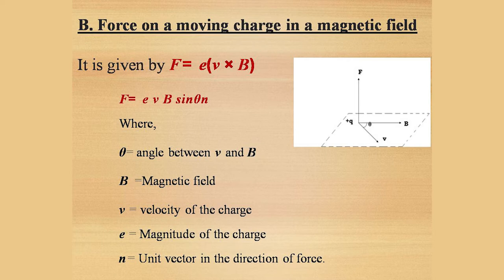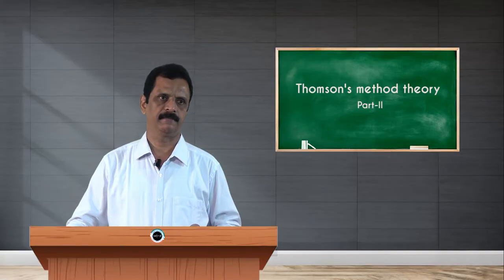The direction of this magnetic force is perpendicular to the plane containing the velocity vector and the magnetic field vector. For example, if the velocity vector and the magnetic field vector are in the xy plane, the force will be in the z direction.